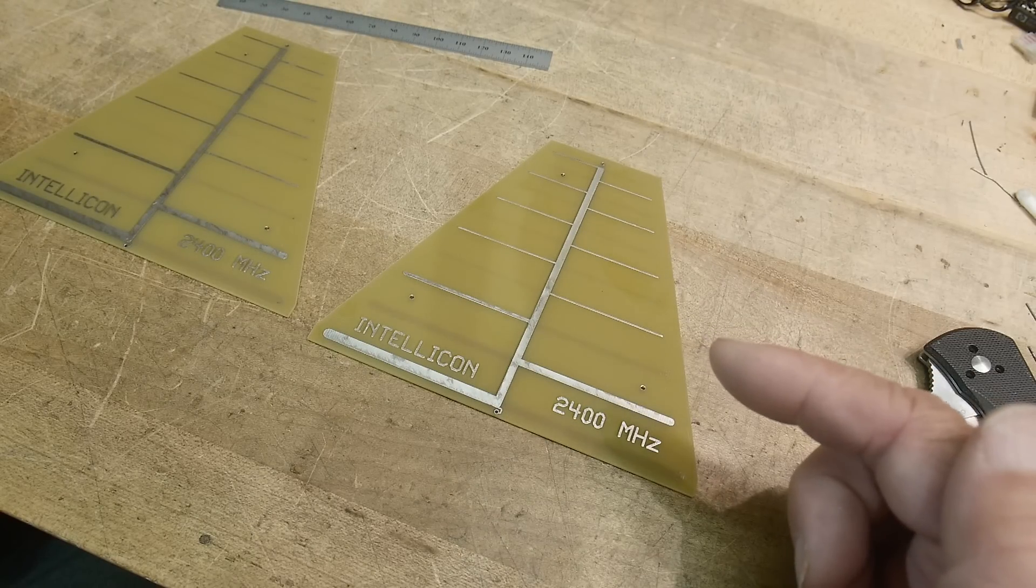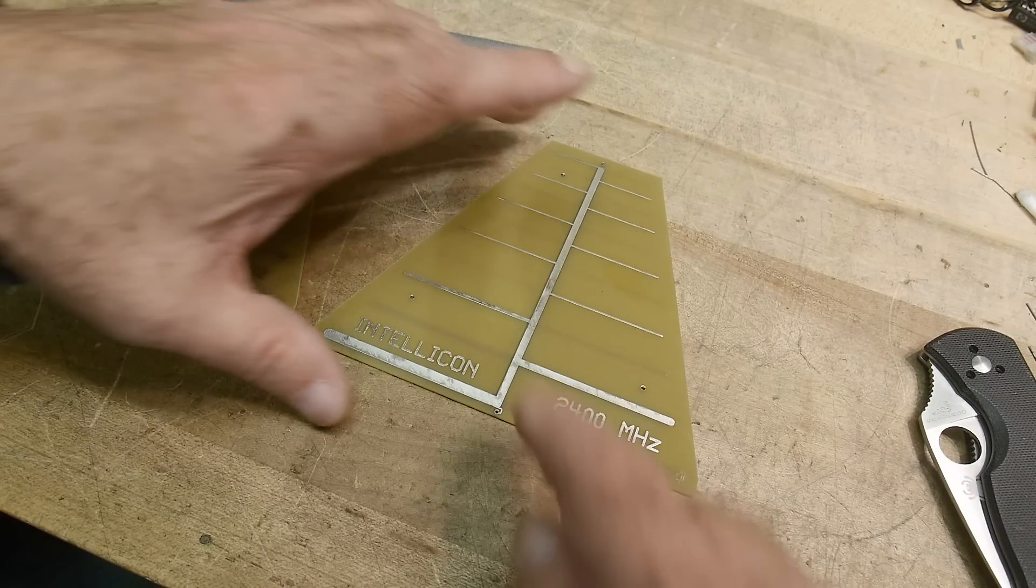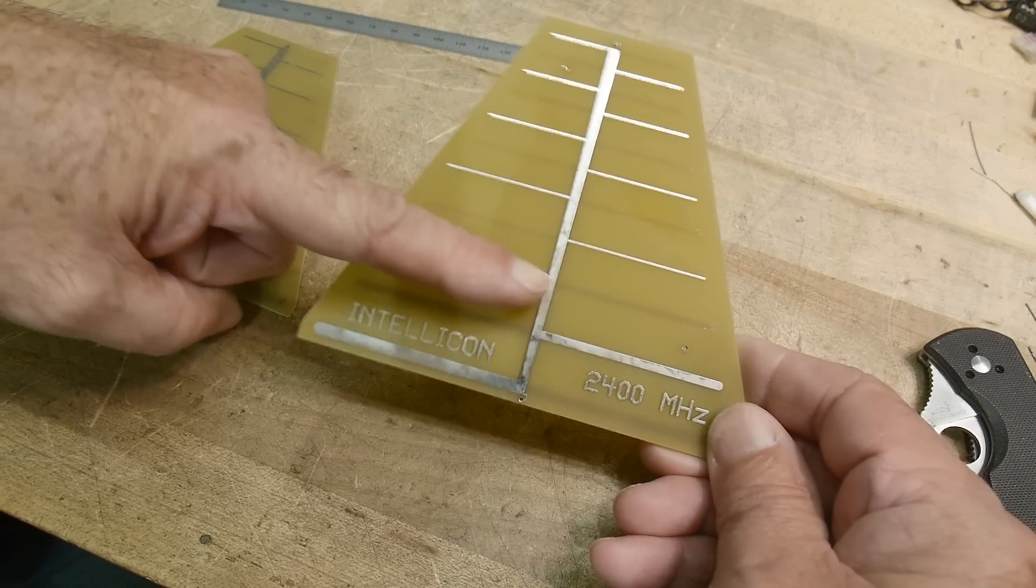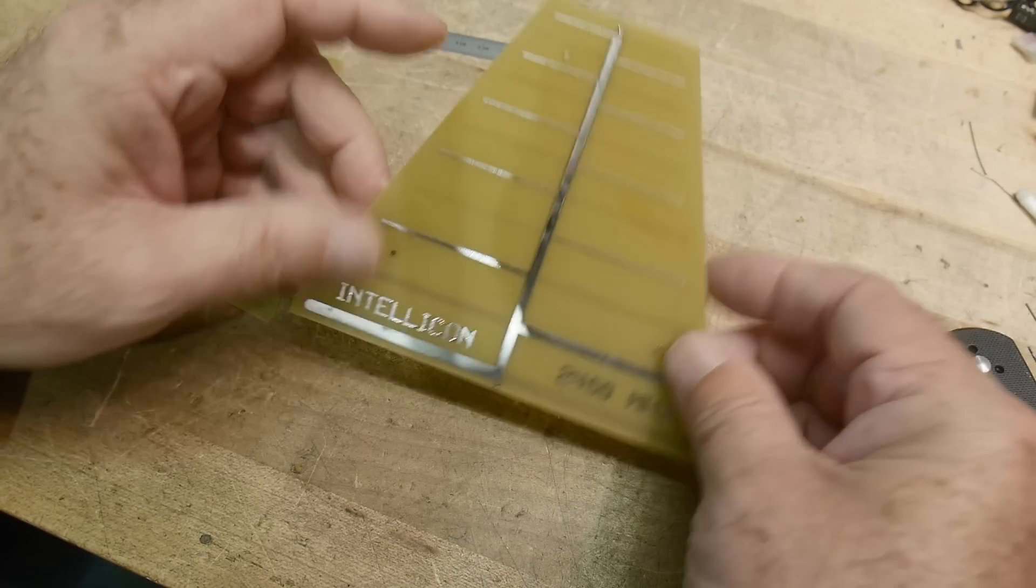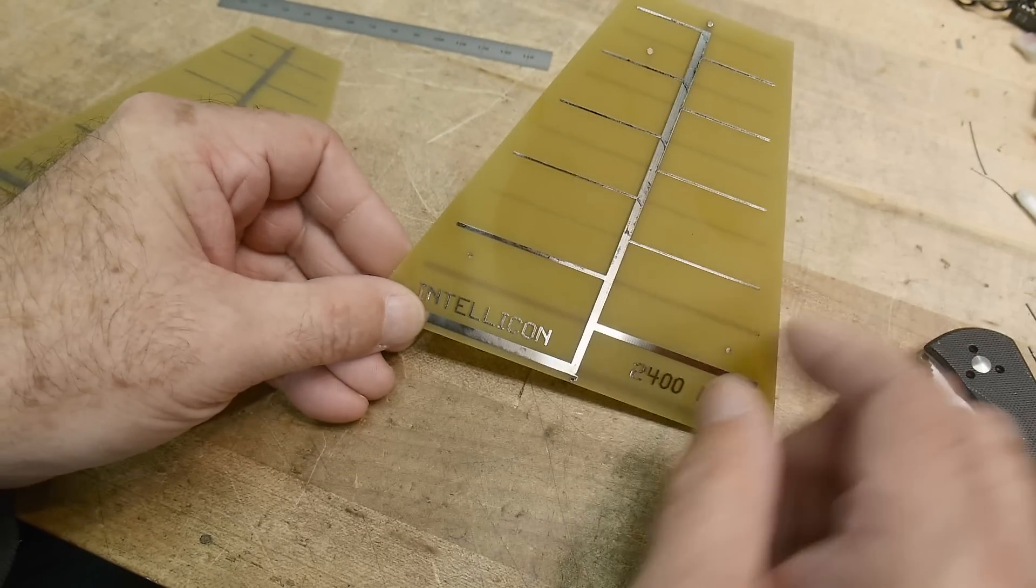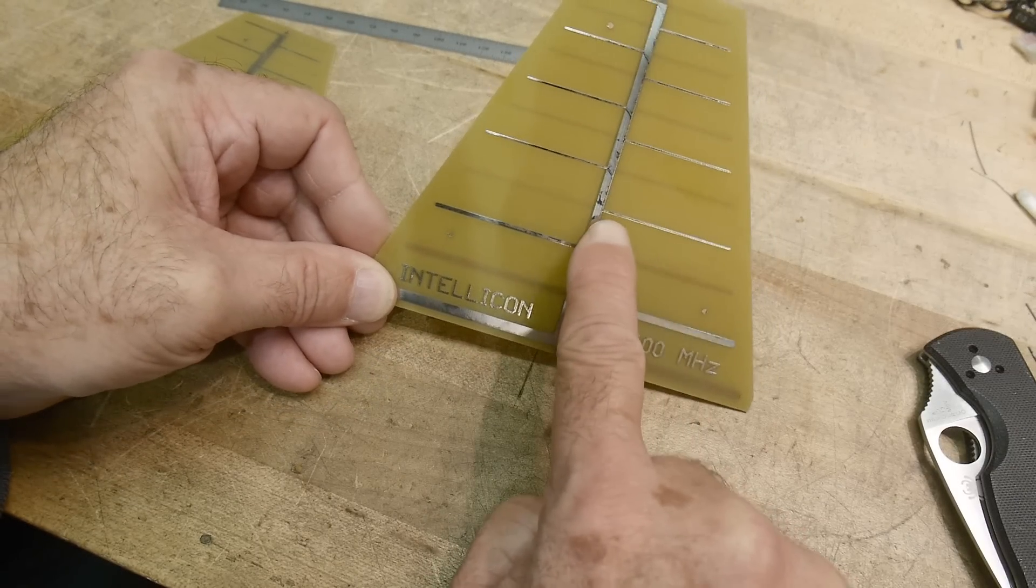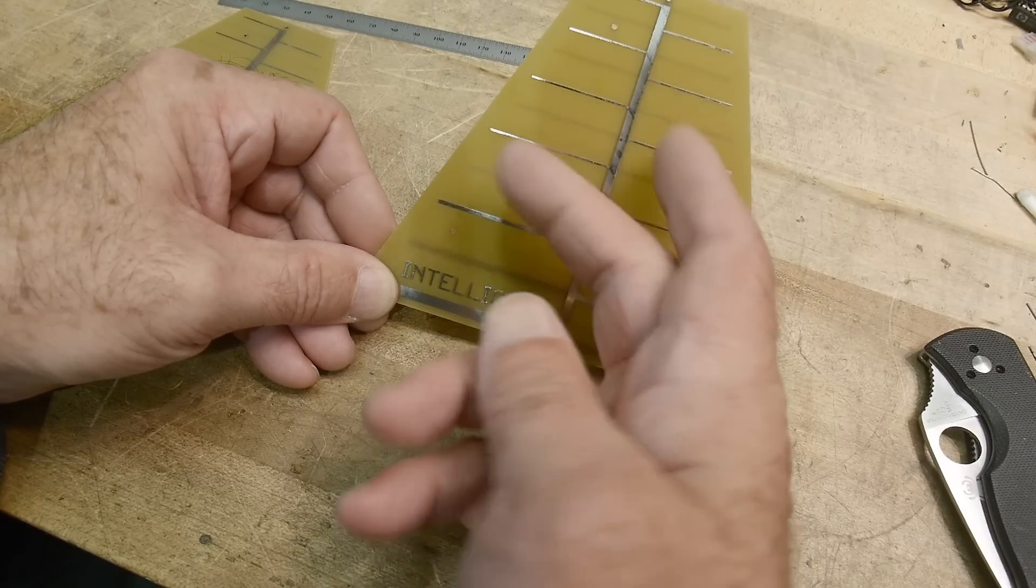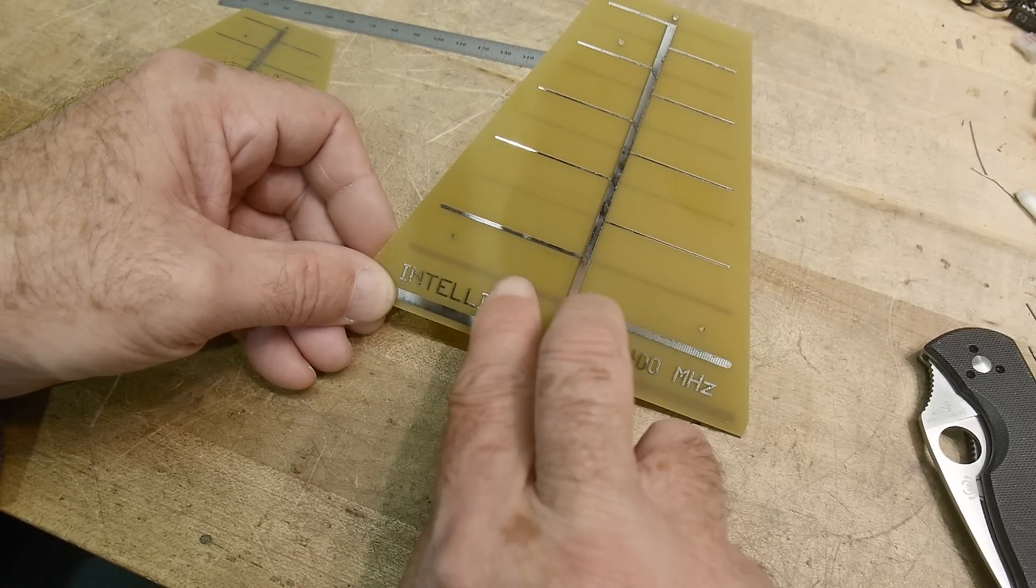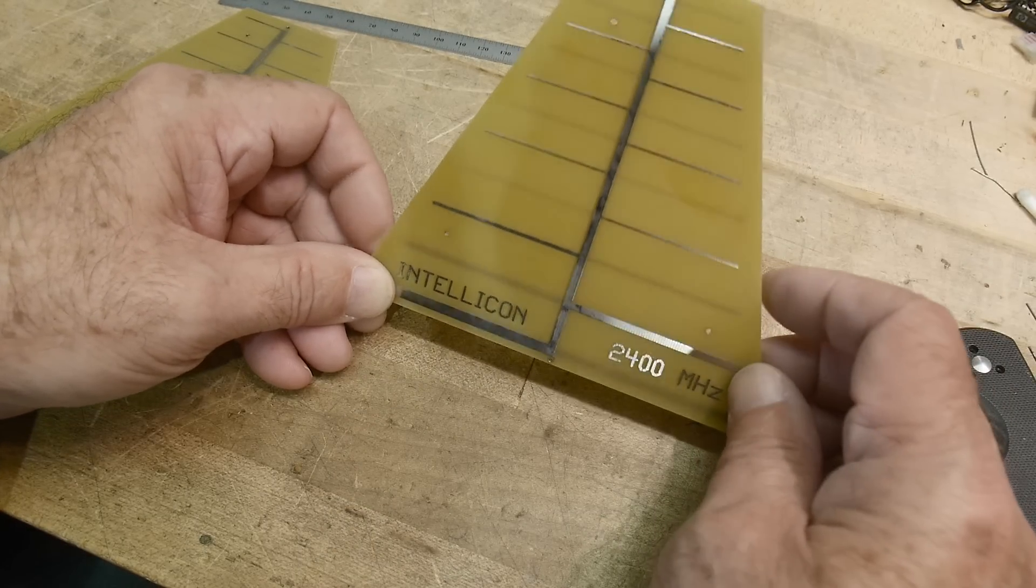The way that these work is that they are phased, right? So one side of the PC board has half of the dipole and the other side has the other half of the dipole. You can kind of see through the PC board, there's a faint line there and then there's a trace. Every other one is out of phase, 180 degrees out of phase. That's just the way log periodics are made.